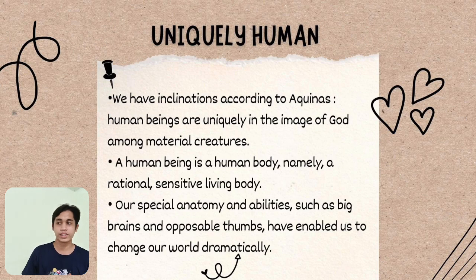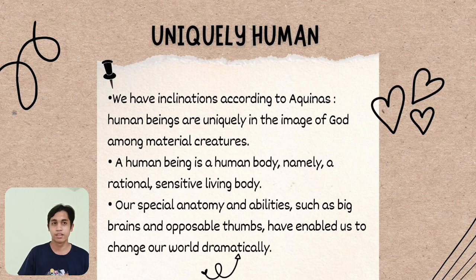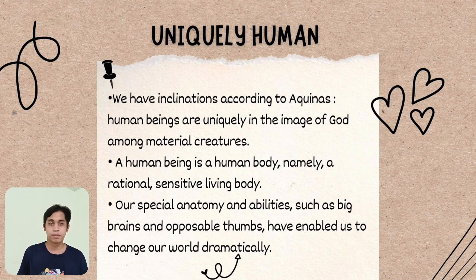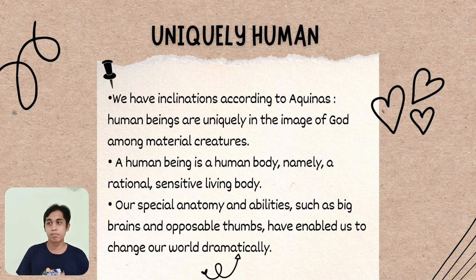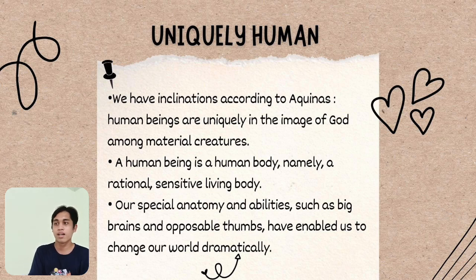Uniquely human: according to Aquinas, human beings have inclinations that are uniquely theirs. Human beings are uniquely made in the image of God among material creatures. A human being is a rational and sensitive living body. Our special anatomy and abilities — such as a big brain and opposable thumbs — have enabled us to change our world dramatically.